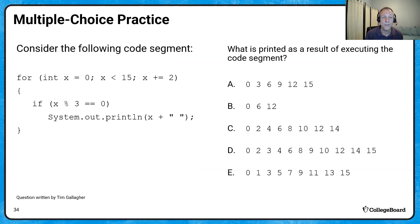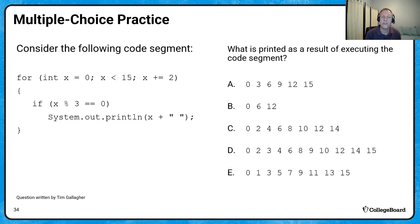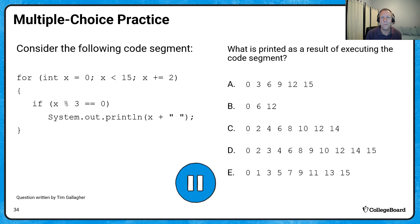Let's try one more multiple choice. This type of question asks what does this print out or what is the outcome of the code. Consider the following code segment: we have a for loop and an if statement. The for loop goes from x equals 0, while x is less than 15, with x plus equals 2 — counting by 2s, not 1s. The if statement checks if x mod 3 equals 0. Go ahead and hit pause and trace through the loop.